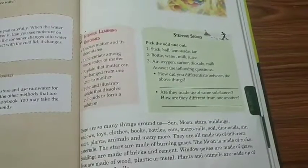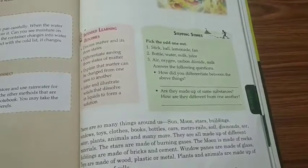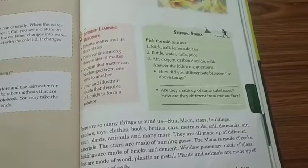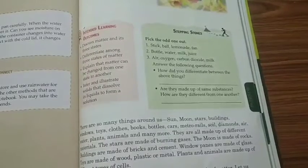Plants and animals are made of different types of cells. What are these materials made of? They are made of matter. Let us learn more about matter in this chapter.